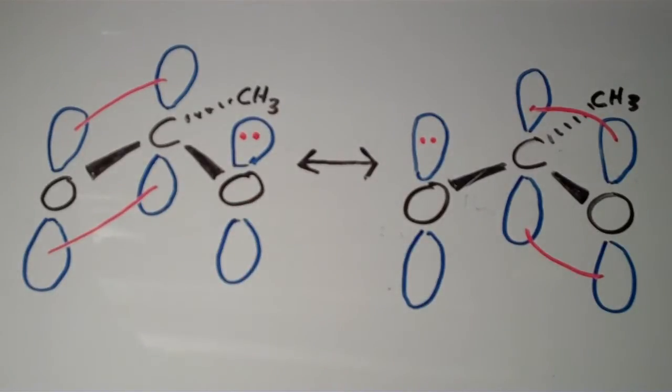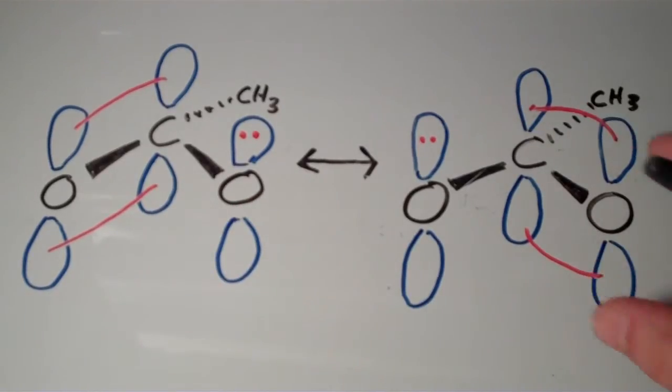And then in the other resonance form, it's flip-flopped. These two orbitals are now the ones that are overlapping to form the pi bond, and this one has the lone pair, the extra lone pair.